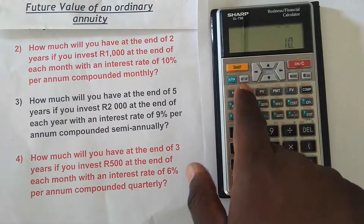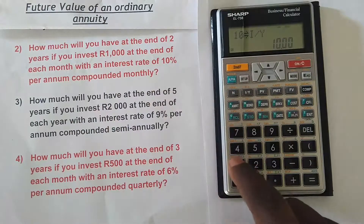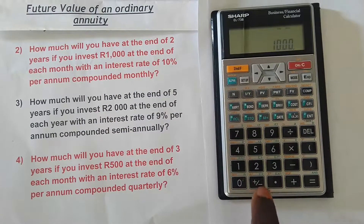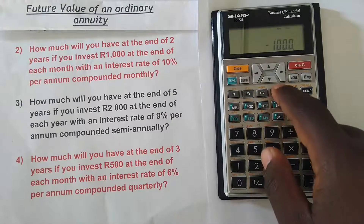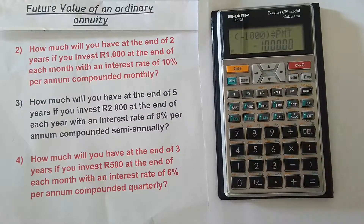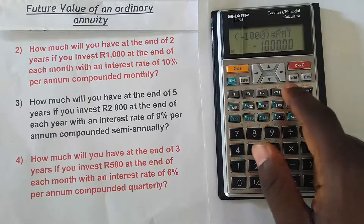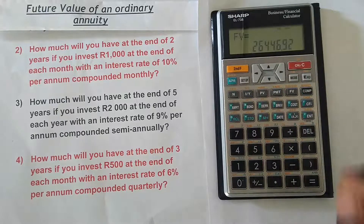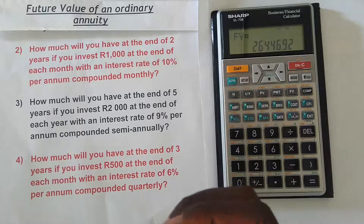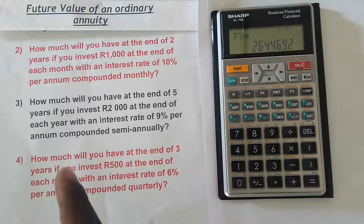Next, put in the interest rate: press 10, then I/Y. Then put in the payment: press 1000, then plus/minus, then PMT. You don't have to press plus/minus, but if you don't, your future value will come out as a negative. Once you've entered the payment, press COMP for compute, then FV. The future value is R26,446.92 — that is how much you'll have if you invest R1,000 every month for two years at 10 percent per annum compounded monthly.